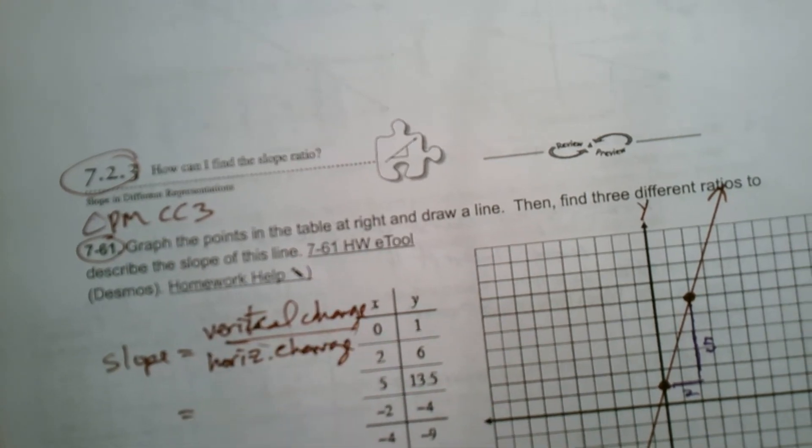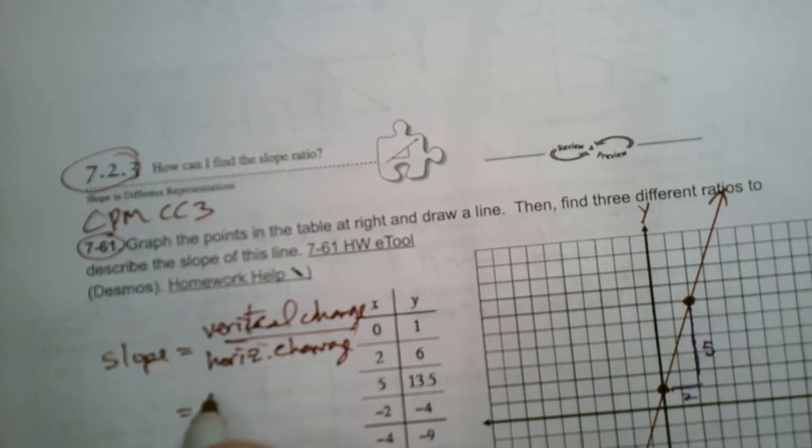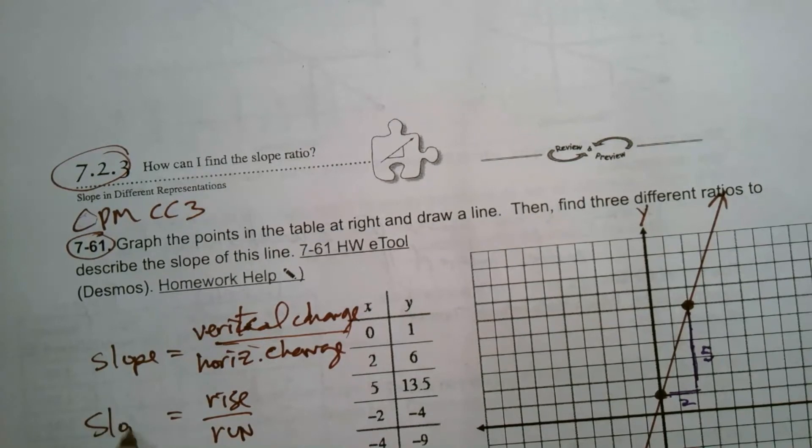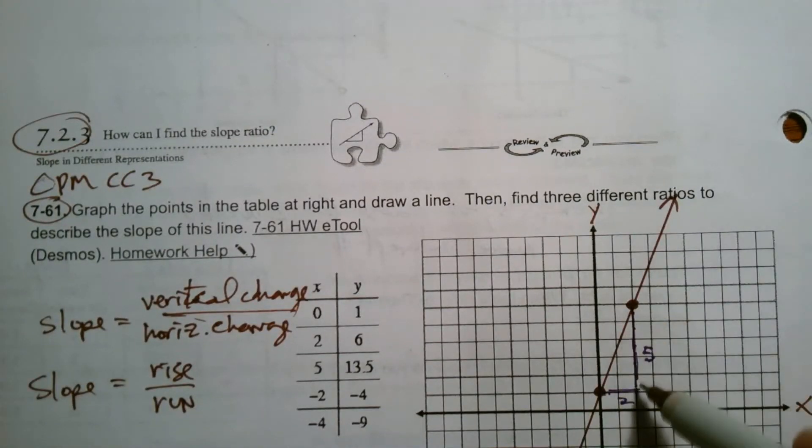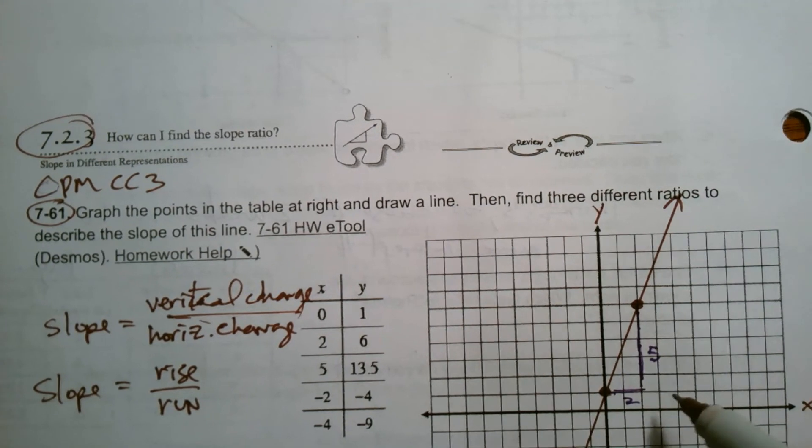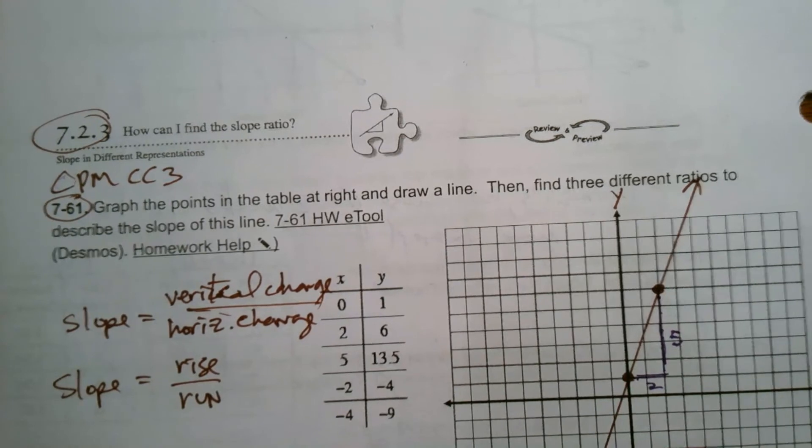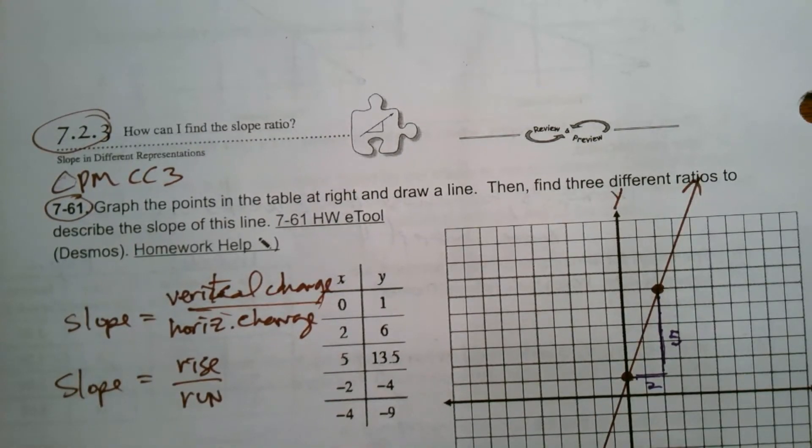Also known as the rise over run, another way to describe that slope. So if I look at this, my rise of five, my run of two, or vertical change of five, horizontal change of two. So there's one way to describe the slope: five over two.